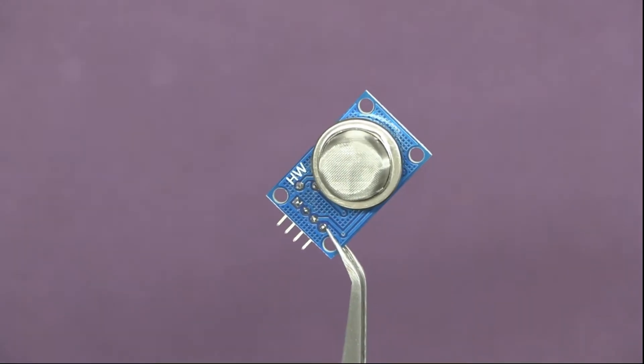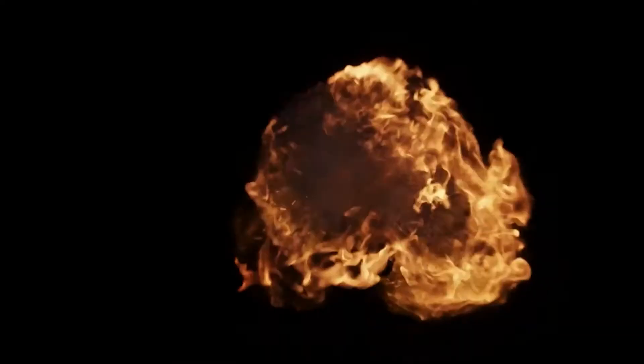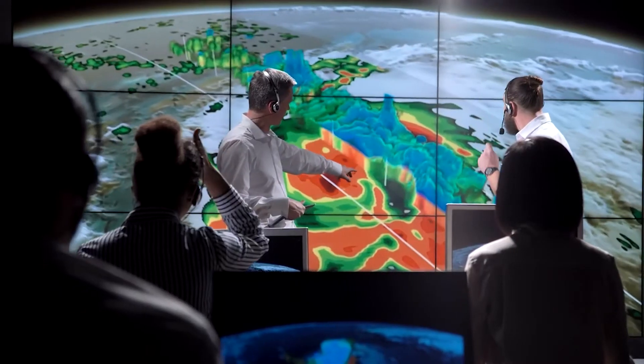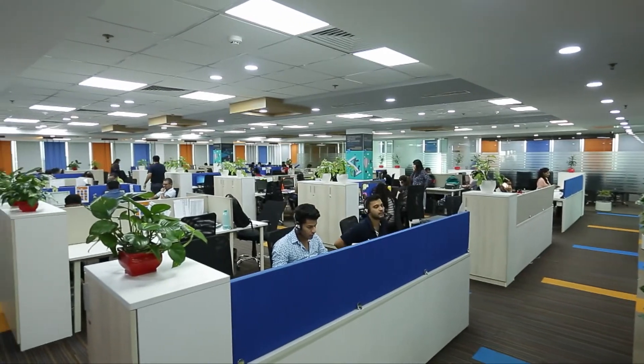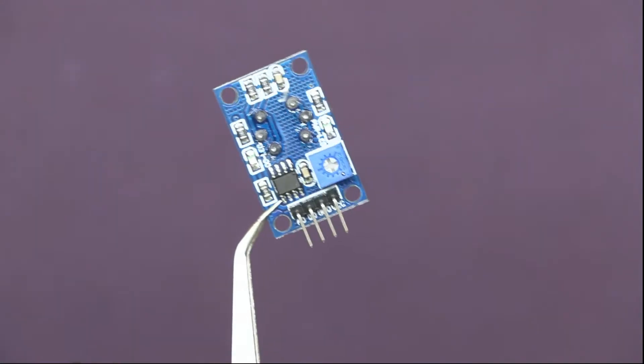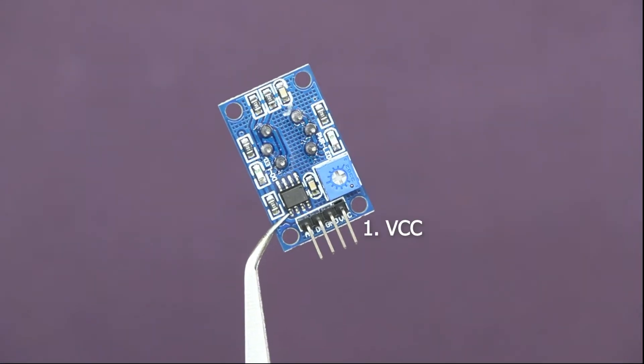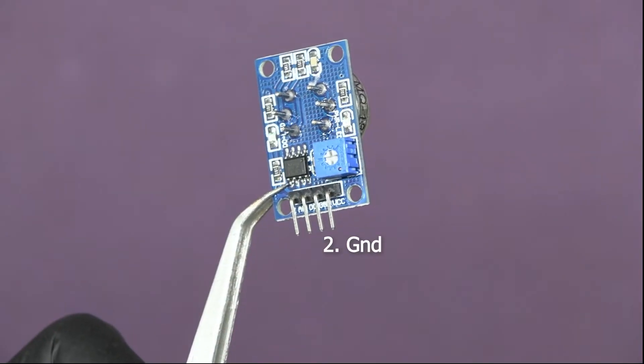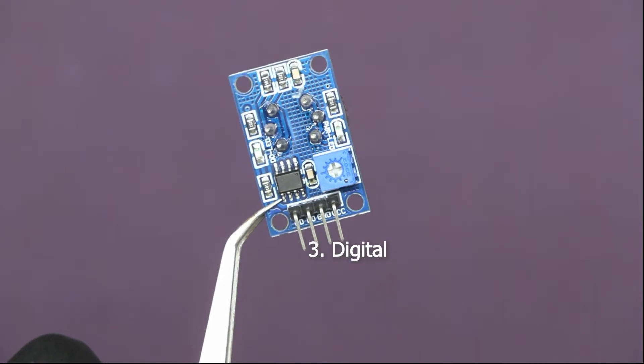A MQ2 gas sensor detects flammable gas or smoke, which is mostly used to monitor the gas leaks in homes, working areas, etc. It has four terminals: VCC, ground, digital, and analog.